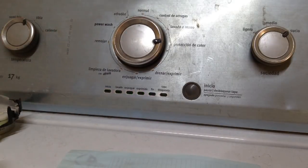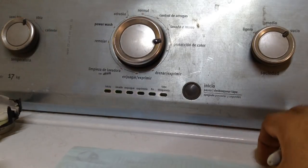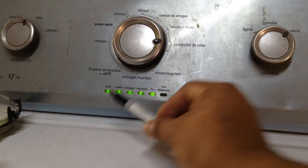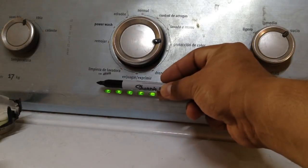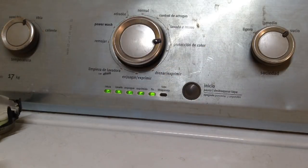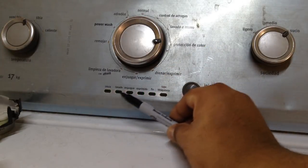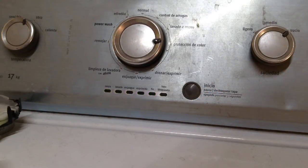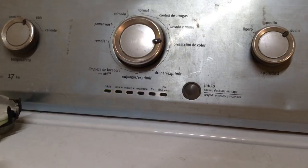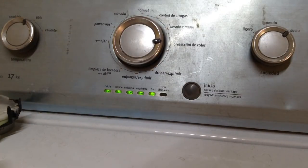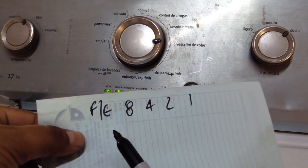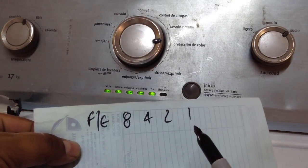Cada LED tiene una representación numérica. No vamos a decir binaria, es una representación numérica. Donde el primer LED, el primero, sea lo que diga arriba, que inicio, que no sé qué. Ustedes básense nada más en el número de LEDs. El primer LED marcará una F o una E. El segundo nos representa el número 8, 4, 2 y 1.